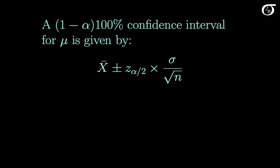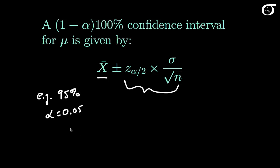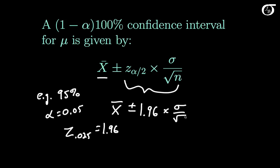To summarize, a (1 minus alpha) times 100% confidence interval for mu is given by the sample mean plus and minus the margin of error derived above. For example, for a 95% confidence interval, alpha is 0.05 and z sub 0.025 equals 1.96. So a 95% confidence interval is x bar plus and minus 1.96 times sigma over the square root of n, where sigma over the square root of n is the standard deviation of the sampling distribution of x bar.